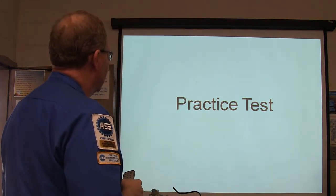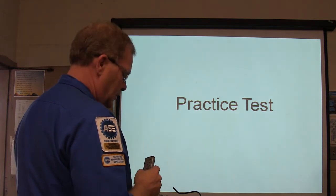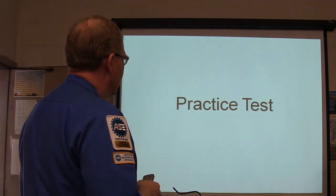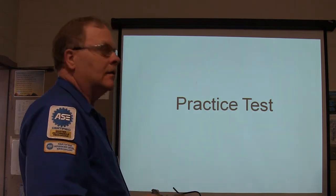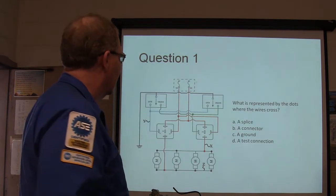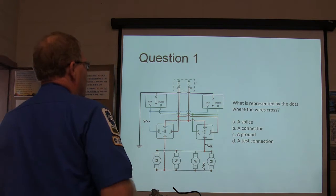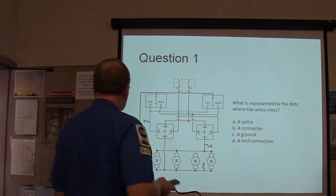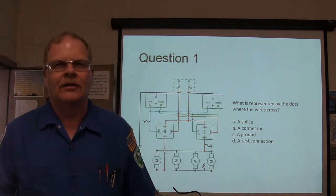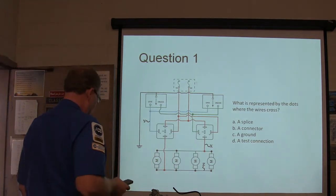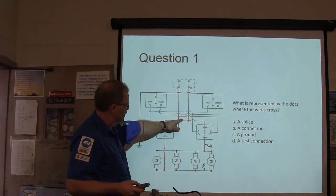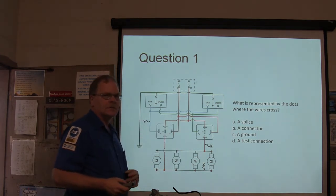This is a little practice test that I put together here, and I kind of like doing these kind of things because it sort of gives you an idea of what it is. Here we go. What's represented by the dots where the wires cross on this schematic? What do you see when you see these dots where the wires cross? I'm talking about here, here, here. What is that?